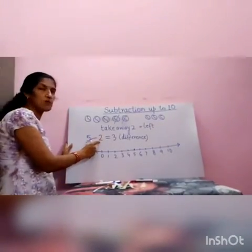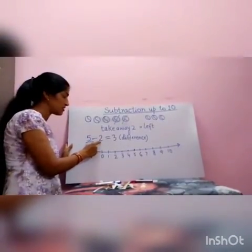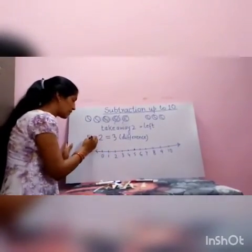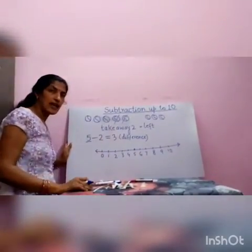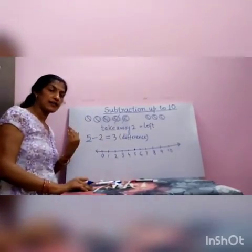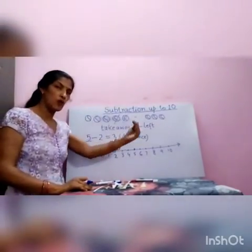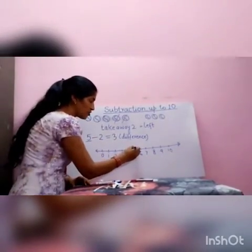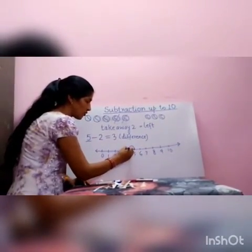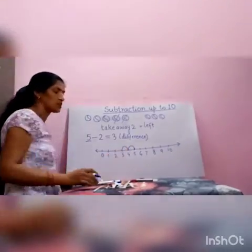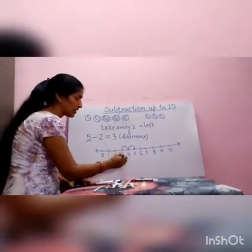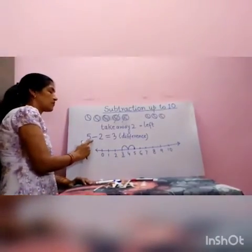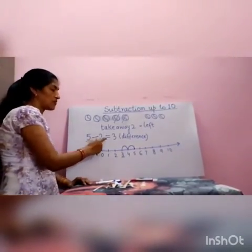How many steps do we have to move? This is 2, so we will move 2 steps. But because this is minus, we will move backward. As in addition we were moving forward, but in subtraction we will move backward. So from 5, move 2 steps back — that is 1 and 2. We reach at number 3, so 3 is the difference. When we take away 2 from 5, we get 3.